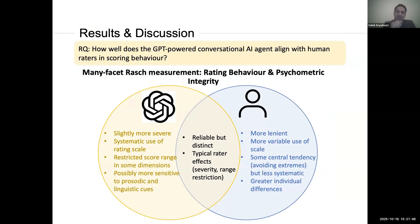In the analysis, we also found that GPT was most severe when scoring pronunciation, with a very limited range. We don't know exactly why it scores pronunciation so severely, but our hypothesis is that it is possibly more sensitive to prosody and other linguistic cues it picks up from the speaker.